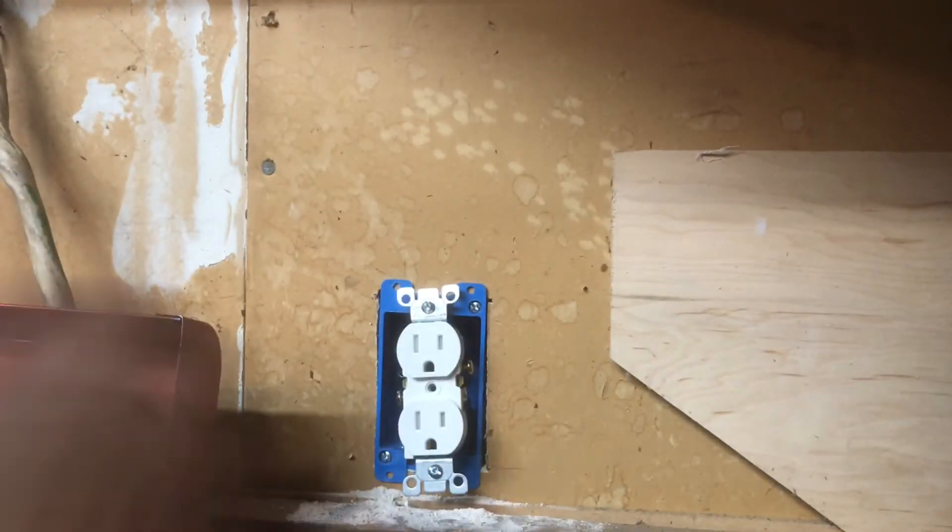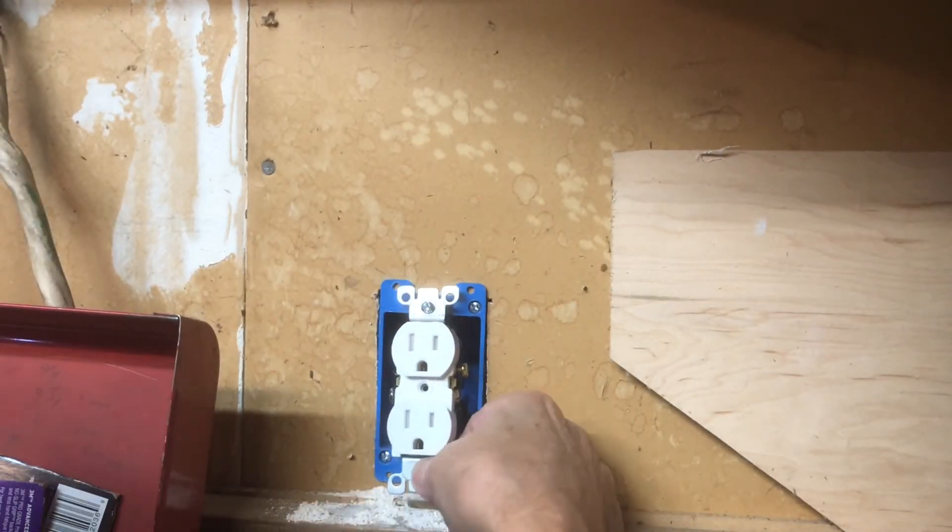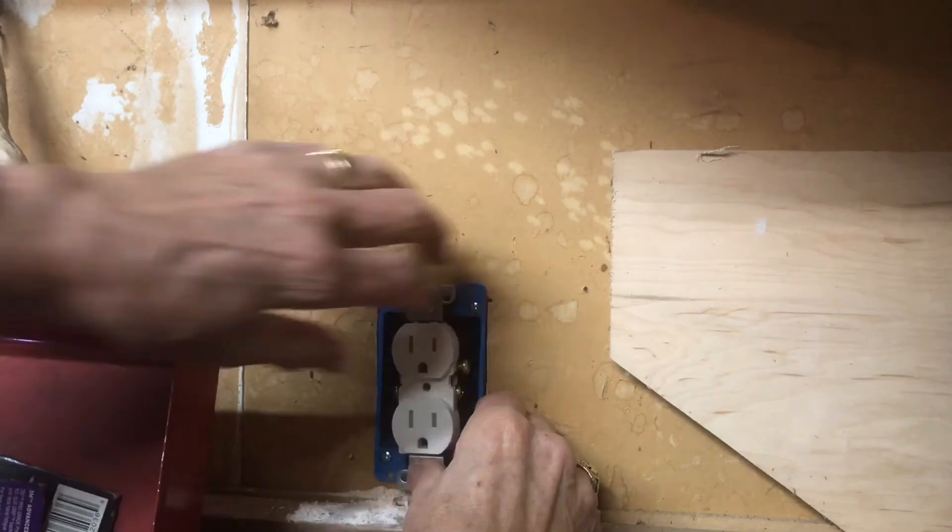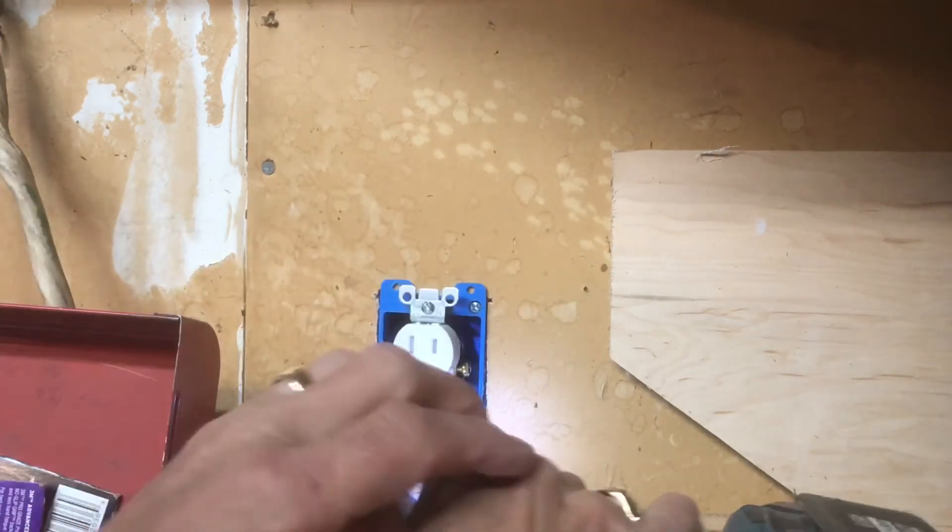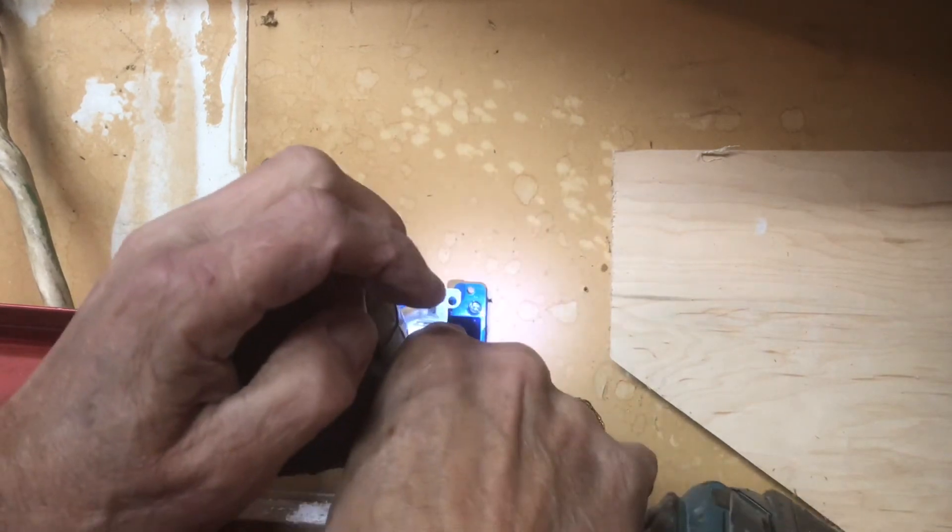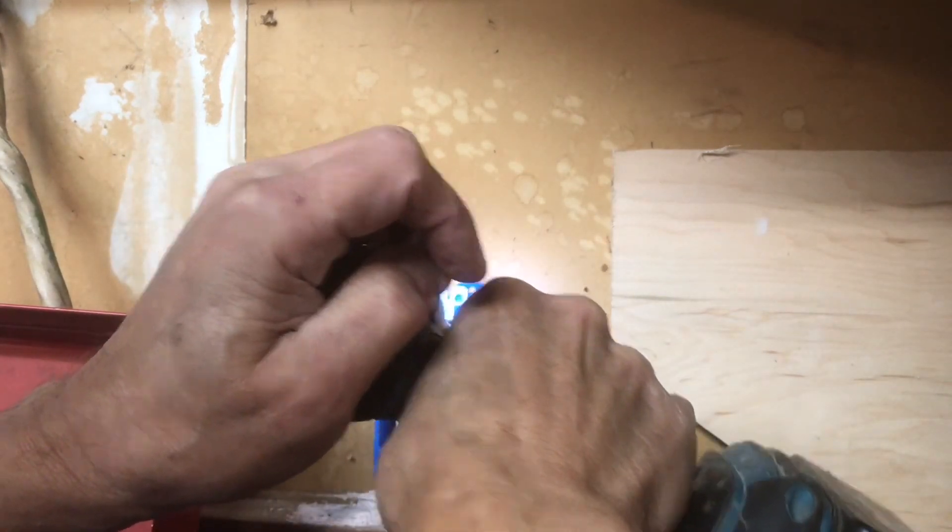We just get these started. We don't shove them all the way in at first because we don't want to bend the metal. We just want it up snug against the box. So we just do it a little bit at a time until we get it where we want it.